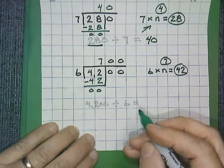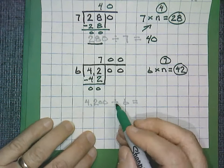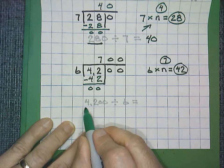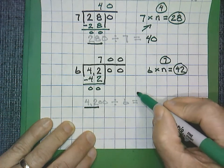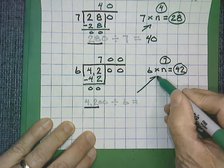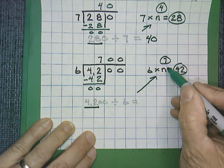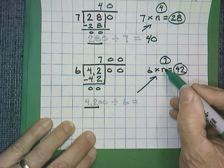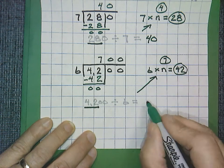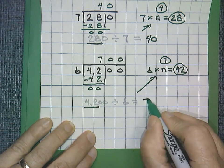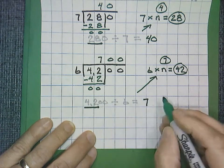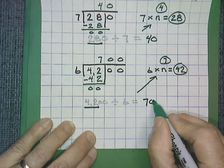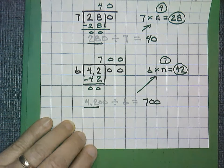Shown in the shorter style, we just work with the 42. We already did that step and got 7. Count our zeros: 1, 2. And write our zeros.